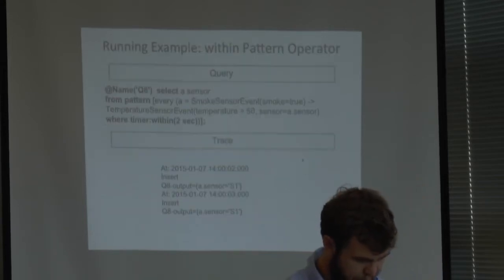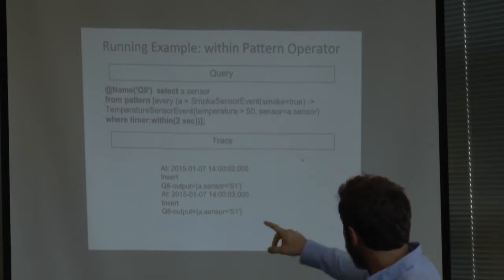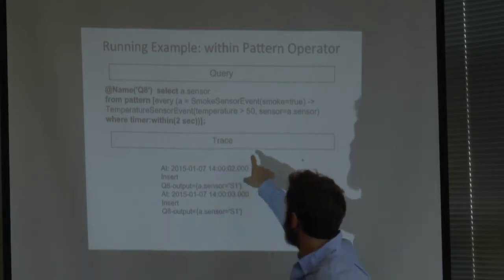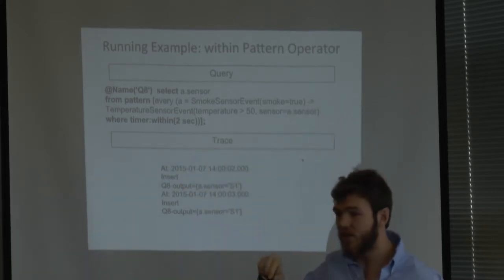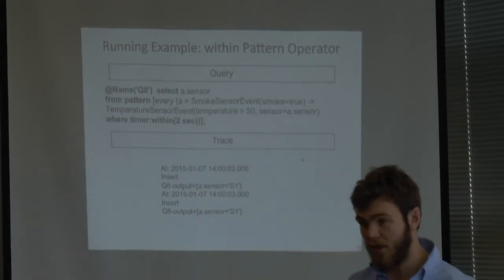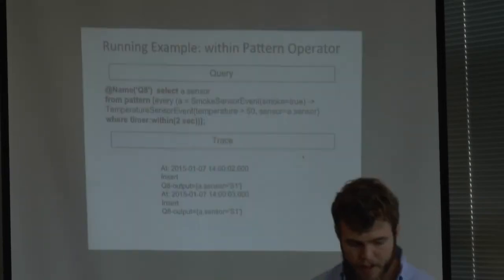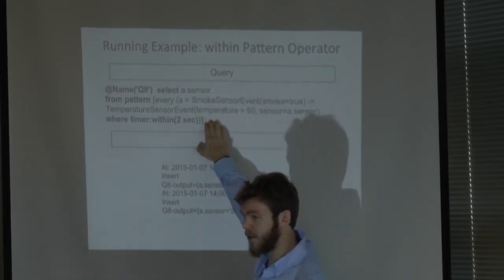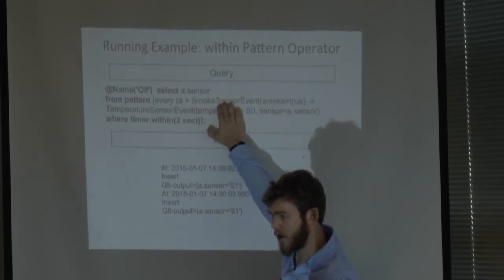There are also sub-expressions with timer:within, timer:within:max, and while expression. They allow you to describe time passing, adding a time constraints to your finite state machine. For example: we select a sensor with a pattern A followed by a temperature sensor event, with a constraint on temperature specified within the event itself. The timer:within specifies a constraint of two seconds between events. The order matters in terms of kind of events - we want the smoke sensor event to happen before the temperature event.